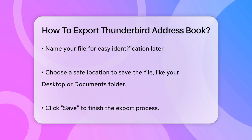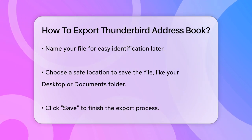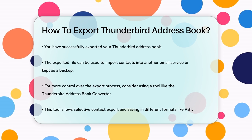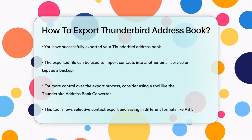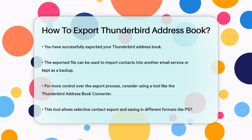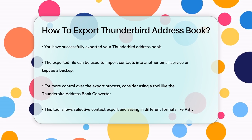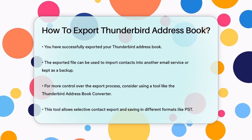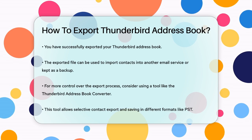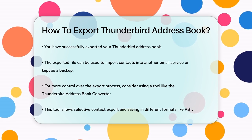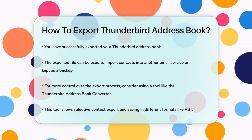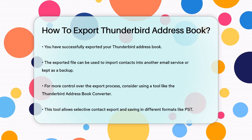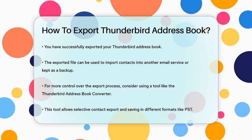If you need more control over the export process, such as exporting only selective contacts or saving them in different formats like PST, you can use a tool like the Thunderbird Address Book Converter. This tool allows you to add your MAB files, select the contacts you want to export, and choose the desired file format before saving them to your chosen location.